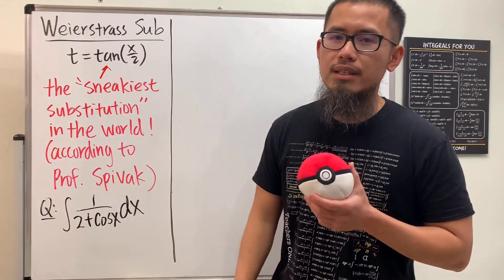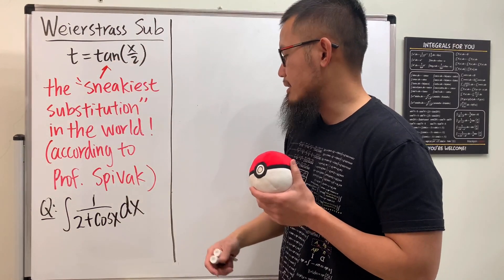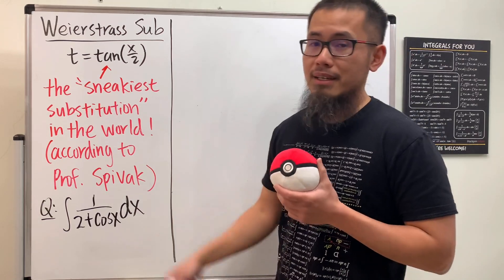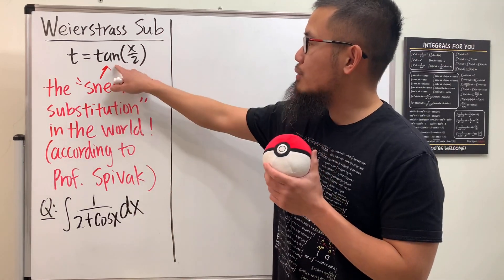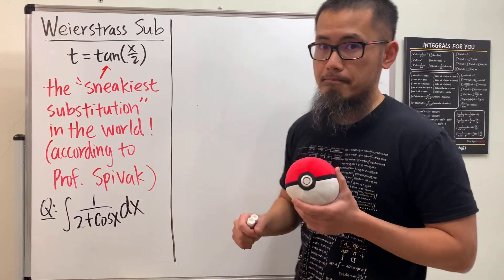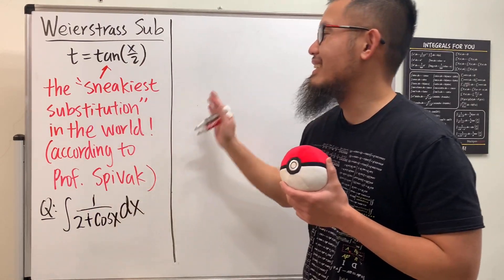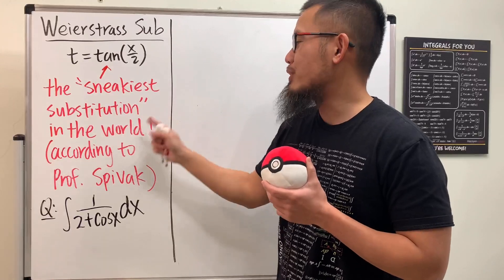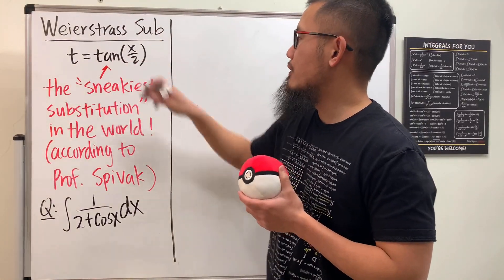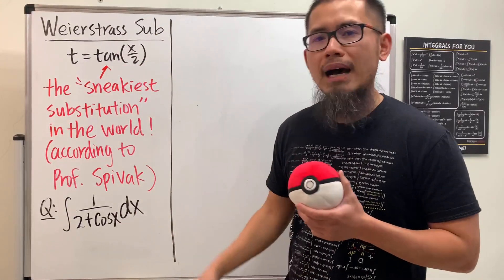Please go ahead and try this, but if you get stuck, don't worry — you can just let t equal tangent of x over 2, and this is going to work out really nicely. This is called the tangent half-angle substitution. According to Professor Spivak, he calls this the sneakiest substitution in the world, because how in the world did anyone know to do this? This integral has no tangent at all, let alone tangent of x over 2, but it works very nicely.